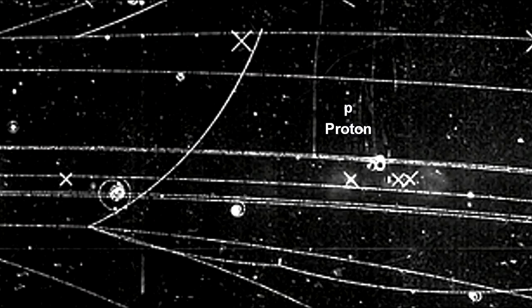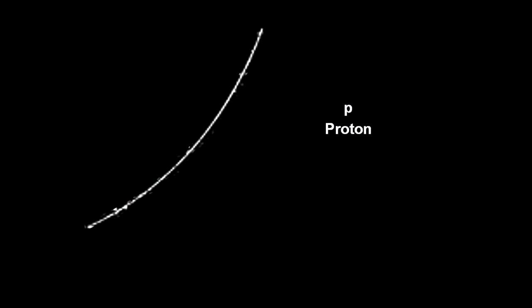In this bubble chamber photograph from CERN, we see a particle's track rotating counterclockwise. This indicates that it is positively charged. The particle's line is also thicker than the others. This indicates that it is a large, slow-moving particle. This is a characteristic of proton tracks.